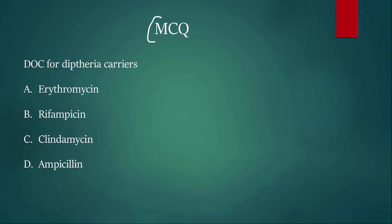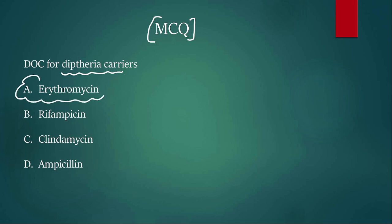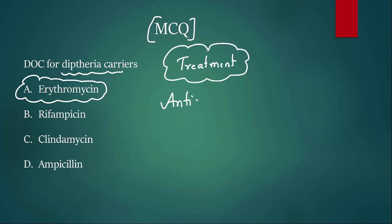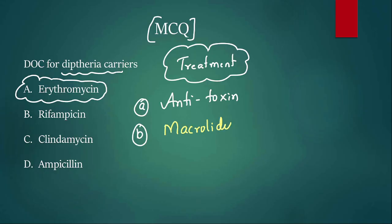Coming to the next MCQ — an antimicrobial question: what is the drug of choice for diphtheria carriers? Options are erythromycin, rifampicin, clindamycin, and ampicillin. If you are saying erythromycin, you are right. Erythromycin is the drug of choice for diphtheria carriers. For a case of diphtheria itself, if the patient comes early, the best treatment is diphtheria antitoxin. Antibiotics are also given — both macrolides and penicillin, with macrolides being more important.